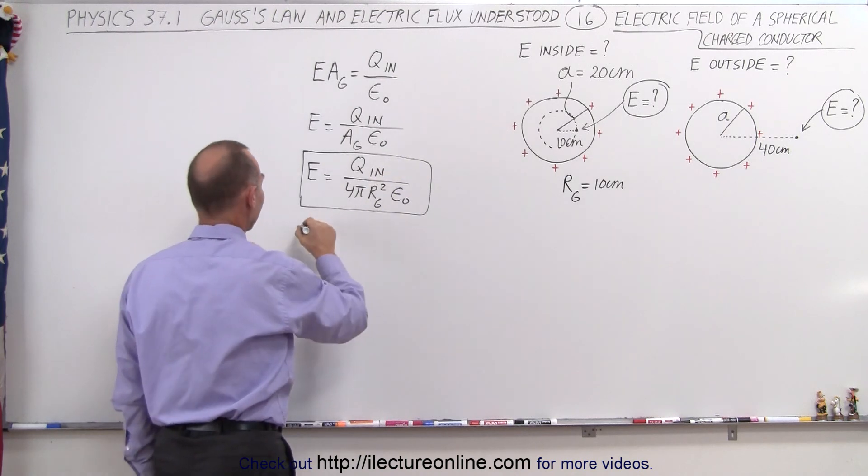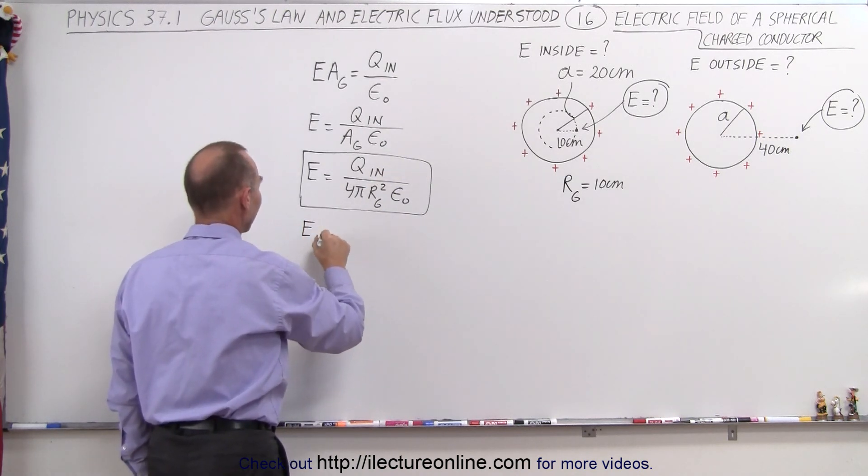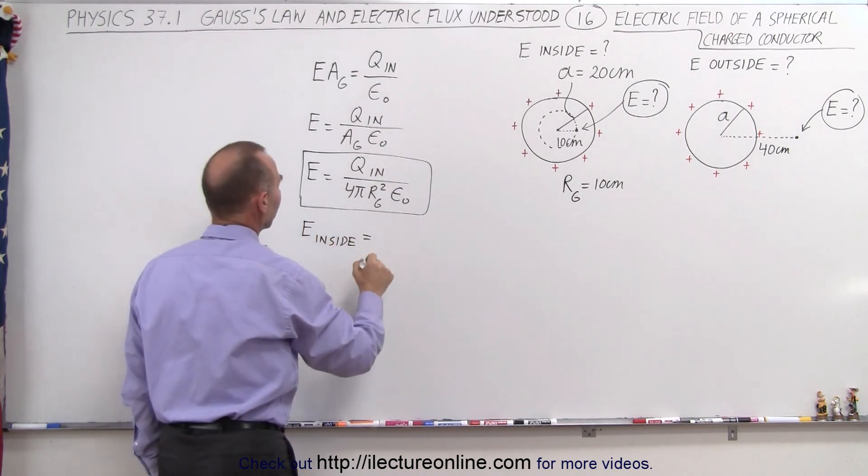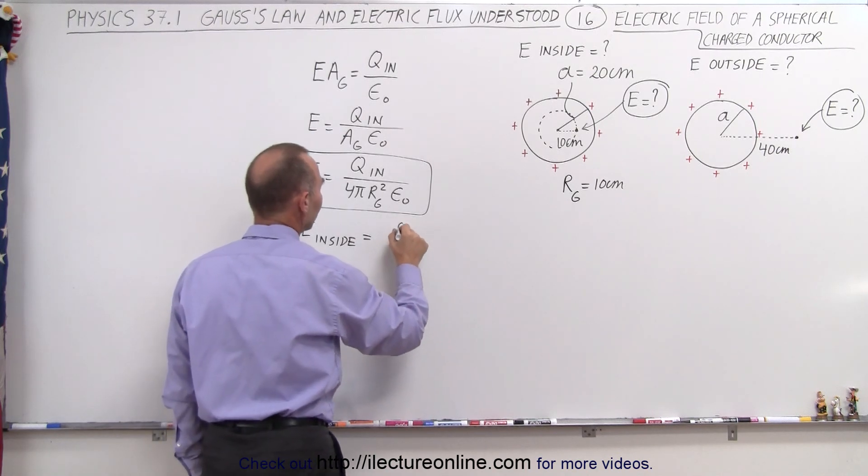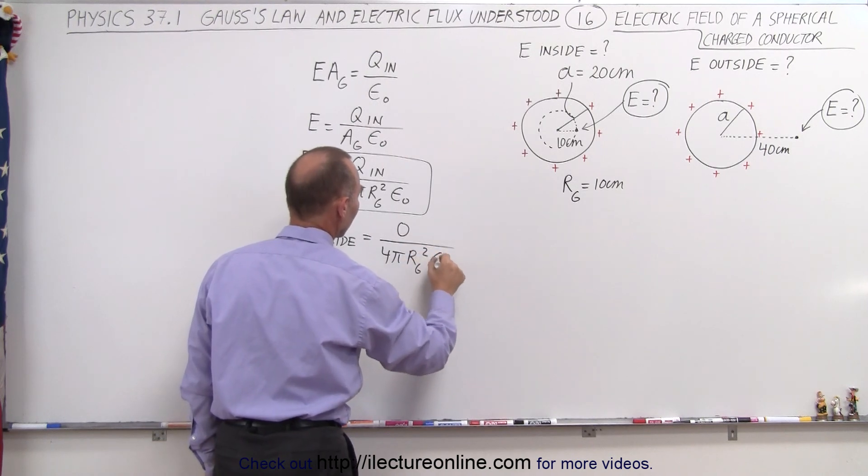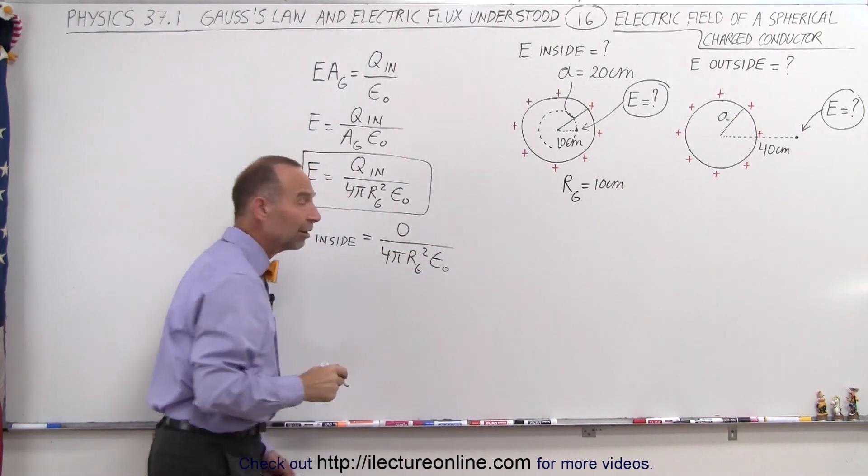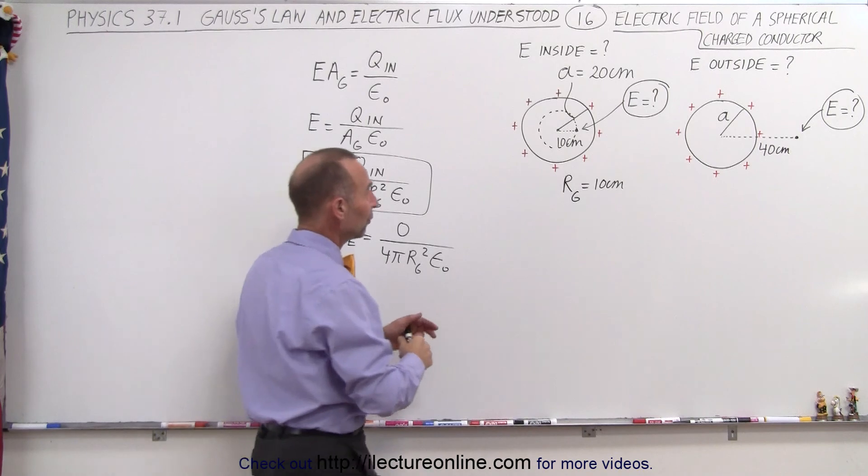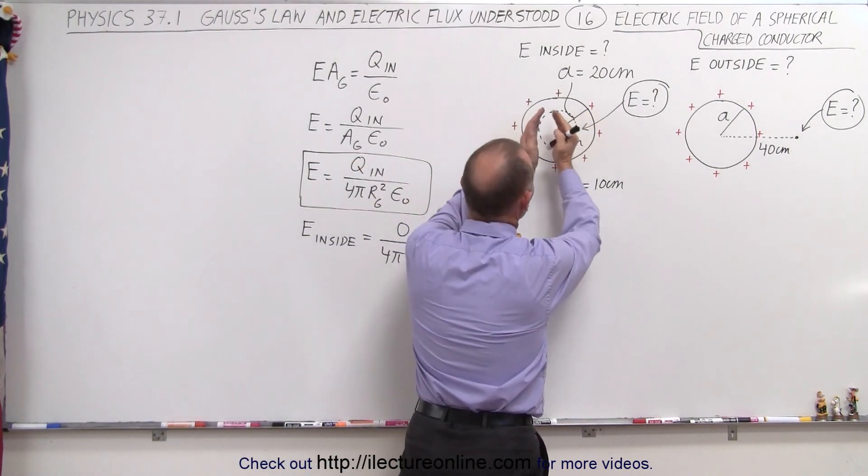To do the E inside, so now we're going to use it for E inside, we realize that this is going to be 0 divided by 4 pi R sub-g squared times epsilon sub-naught. The reason for that is when we take any Gaussian surface, regardless of what the radius is, 10 centimeters, 5 centimeters, 15 centimeters.